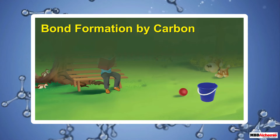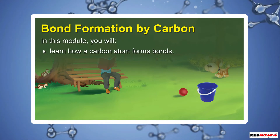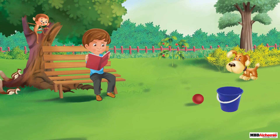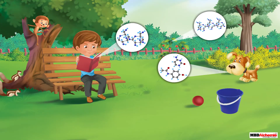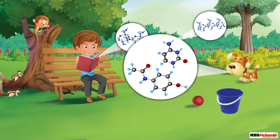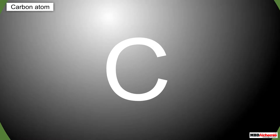Bond formation by carbon. In this module you will learn how a carbon atom forms bonds. Carbon is present in a large number of substances around us, like paper, the food we eat, and most importantly all living beings. An important point to notice is that carbon in all these things is present in the form of certain compounds, formed as a result of bonding between carbon and other atoms.